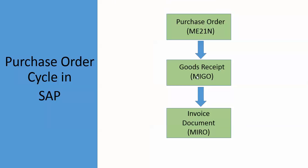Goods receipt is a confirmation that whatever material mentioned in the purchase order has been received at our plant. After goods receipt, we will have to pay our vendor. First, we have to create an invoice document. The transaction code to create an invoice document is MIRO. We will learn about the invoice document in this video session.